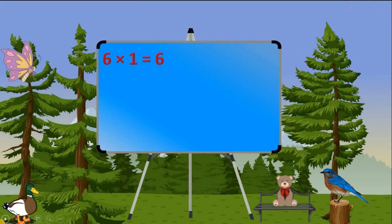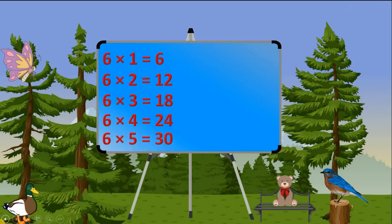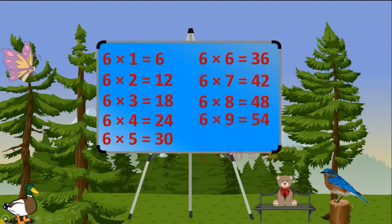6 times 1 equals 6. 6 times 2 equals 12. 6 times 3 equals 18. 6 times 4 equals 24. 6 times 5 equals 30. 6 times 6 equals 36. 6 times 7 equals 42. 6 times 8 equals 48. 6 times 9 equals 54.